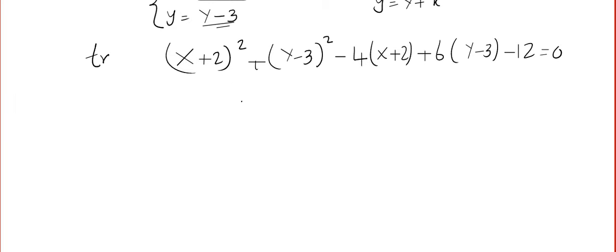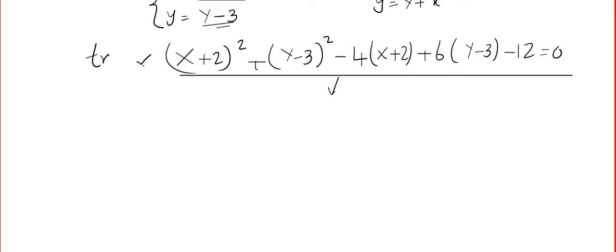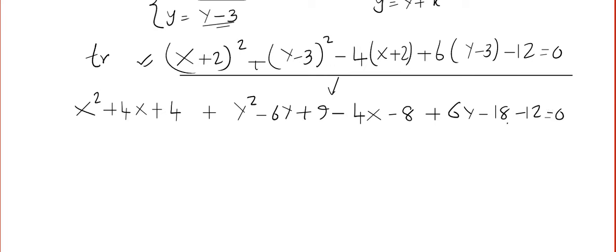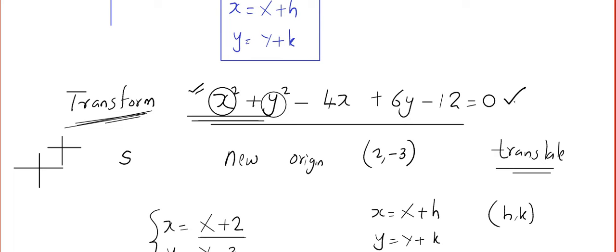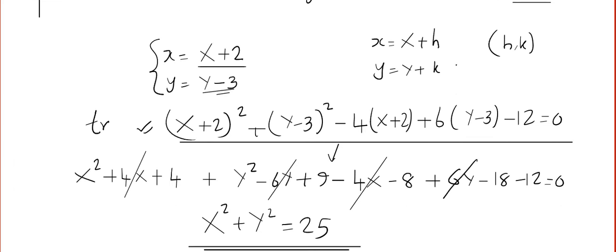Make sure you expand this equation very, very carefully because in exam answer papers, I always see students do up to this step perfectly but make a lot of careless mistakes afterwards. Simplify using (a + b)²: x² + 4x + 4 + y² − 6y + 9. The 4x terms and 6y terms cancel, and we end up with x² + y² = 25. What happened here is I started with a general circle and ended up with the standard circle.